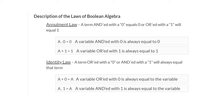The description of the laws of Boolean algebra. The first law is the annulment law, where a AND 0 is equal to 0, and a OR 1 is equal to 1.